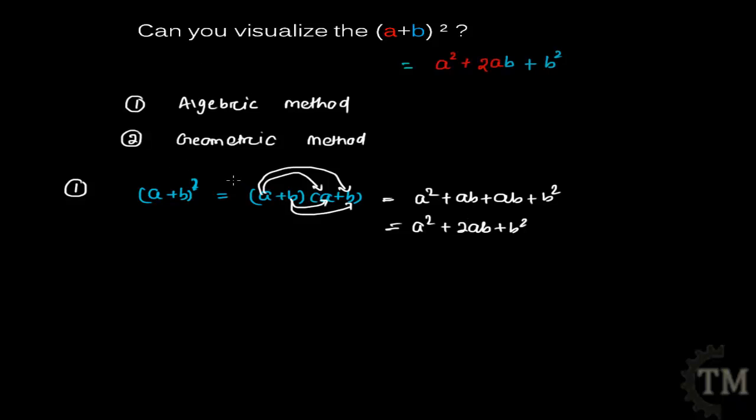The second method is geometric. That method is really similar to visualize, so how will you do it? It's very simple. First, write (a+b)² then draw a square.